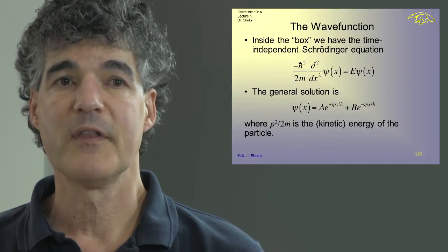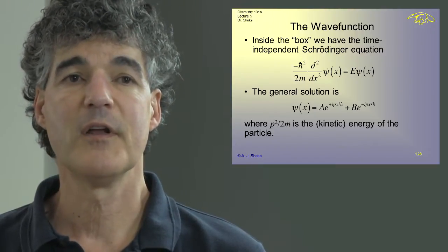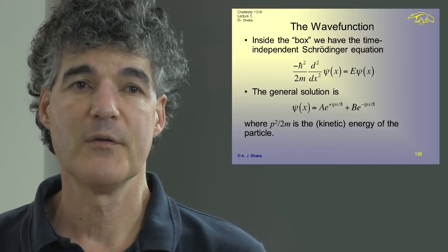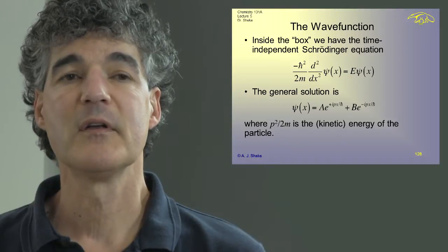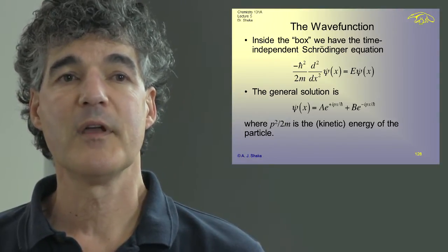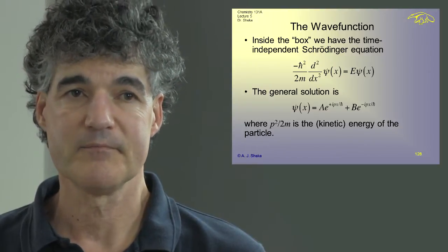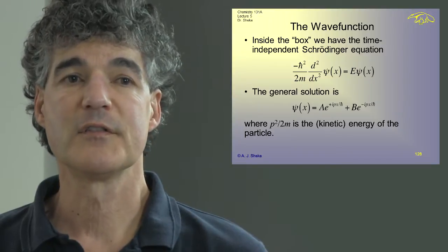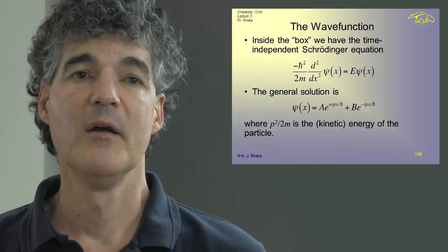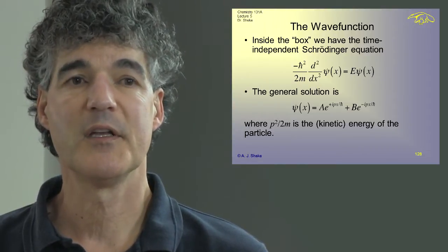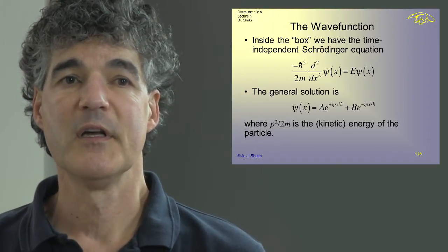Inside the box we have the time-independent Schrödinger equation: minus h-bar squared over 2m times the second derivative of psi equals E times psi—there's no V, so I've left that out. That will give us the energy eigenfunctions inside the box. The general solution is A e^(ipx/ħ) plus B e^(-ipx/ħ), where p²/2m is the kinetic energy of the particle.